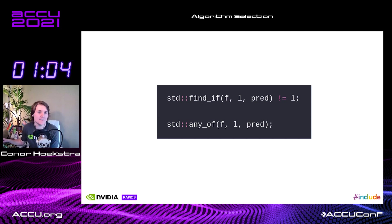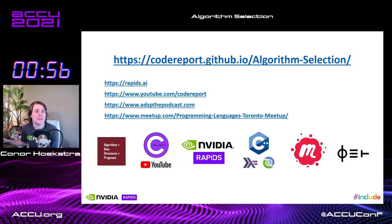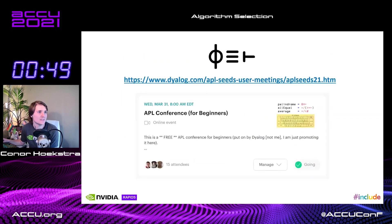So that's all I have. Here are all the links. And I will do a final shout out: if you are wondering what the three symbols in the bottom right are, they are APL characters that define an implementation of is_palindrome.